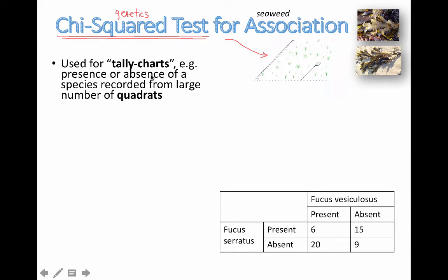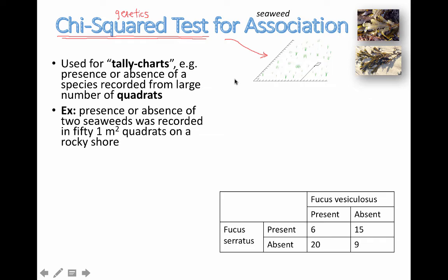This type of data, when you're collecting data using tally charts where you're going around an area, you look in this box—okay, there's this type of seaweed there, add a tally mark. Okay, there's this type of seaweed there as well, add a tally mark in that column. If there's not, then you don't add tally marks. We're looking for the presence or absence of a type of species recorded from a large number of quadrats, so we're going to move this little box to different places, and that's going to be generated randomly.